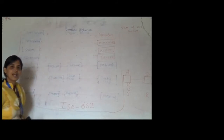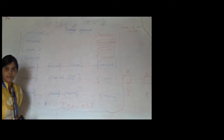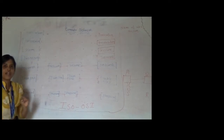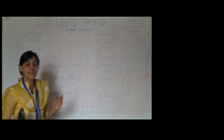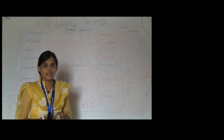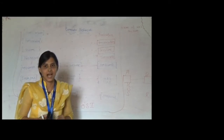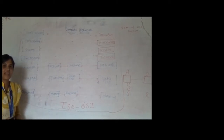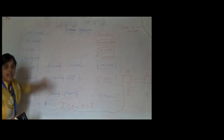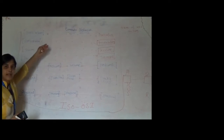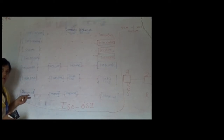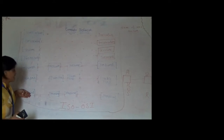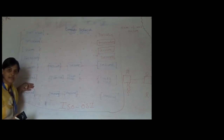Now we have to discuss the functionalities provided by each and every layer. Before starting the functionalities in detail, there are some basic terms we must know. The task of a communication model is very complex, so the complex task is divided into small tasks, and every small task is assigned to layers. These layers are arranged in a hierarchical fashion — arranged in a stack — where the layer below has to provide certain services to the layer above it.